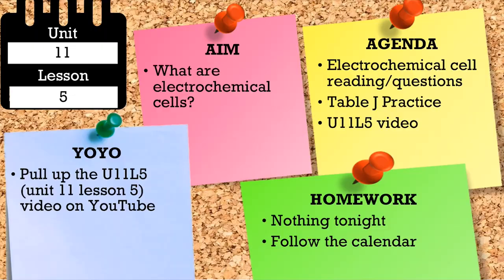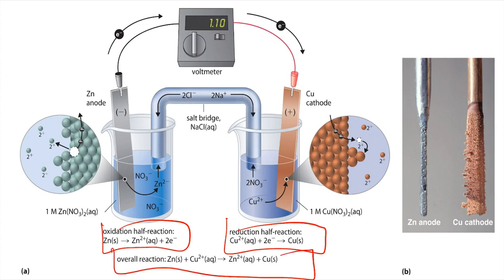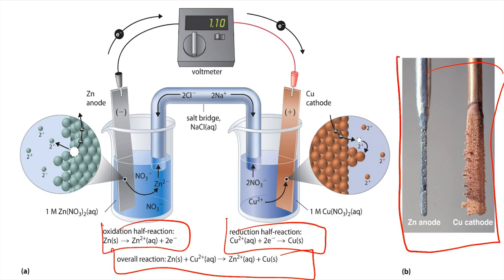This is one of the pictures from the reading and it shows something called a voltaic cell. We're going to learn how to draw and analyze these, just not yet. You'll see oxidation and reduction happening with those half reactions. The balanced redox reaction will come in handy. All the labels — anode, cathode, salt bridge, voltmeter — will be figured out. You can also see the cathode is getting bigger and the anode is getting smaller.